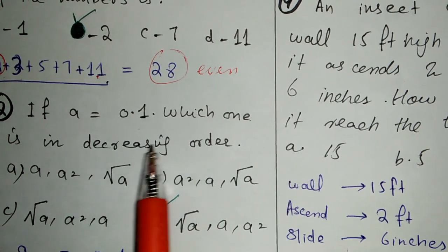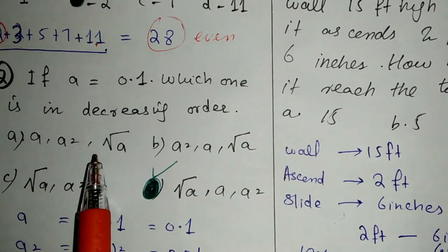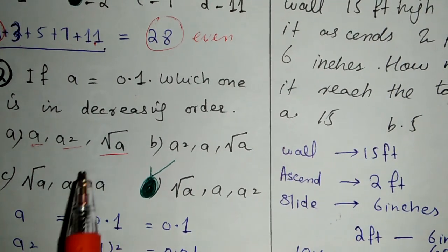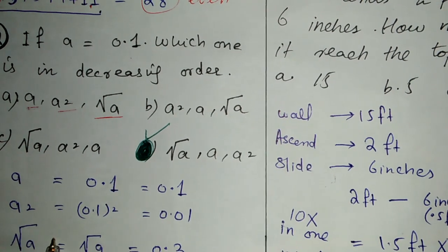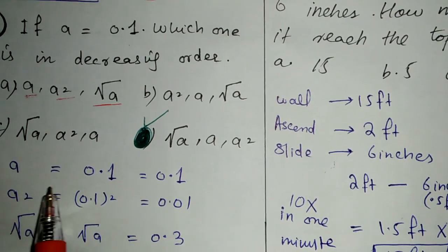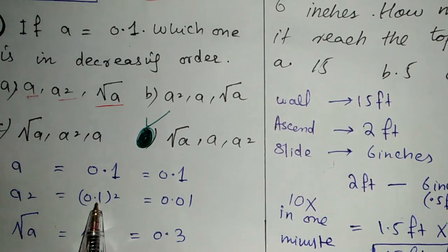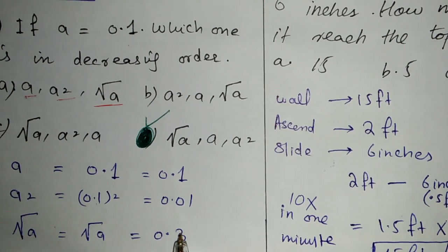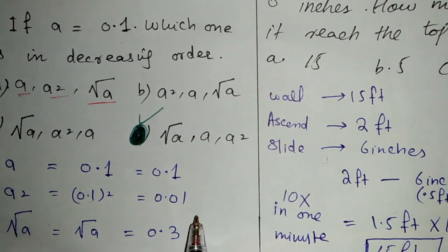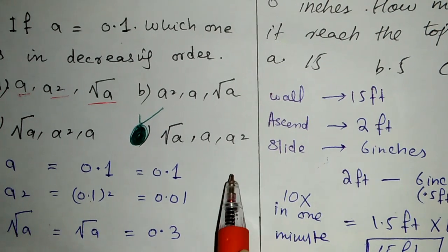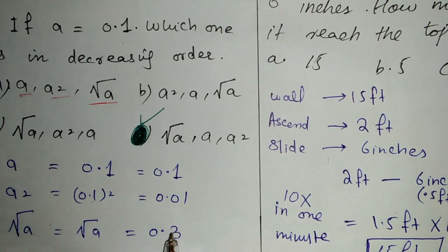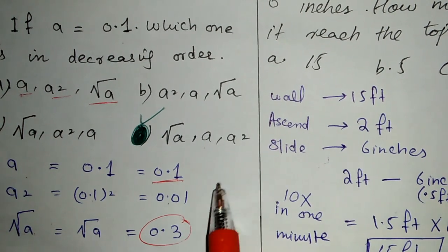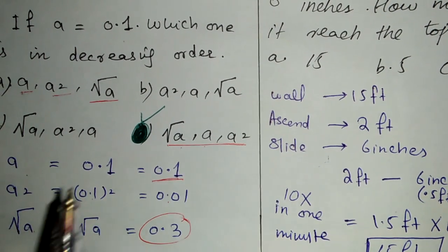If A equals 0.1, which one is in decreasing order? We need to look at three expressions: A, A², and √A. We put the value A = 0.1 into each. When A = 0.1, then A² = 0.01 and √A = 0.3. Now we arrange in decreasing order. We see that √A = 0.3 is the largest, then A = 0.1, and A² = 0.01 is the smallest. So the answer in decreasing order is √A, A, A².